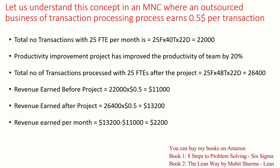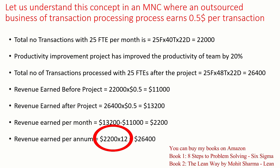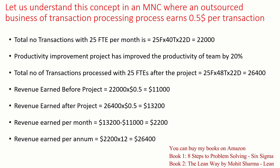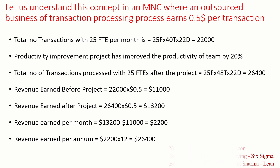Revenue earned per month is the difference: $13,200 minus $11,000, which gives us $2,200 per month. Total revenue earned per annum is $2,200 multiplied by 12, which gives us $26,400. This is how business impact is calculated in a productivity improvement project in a transaction-based process where the number of transactions processed are being paid.